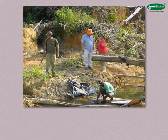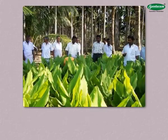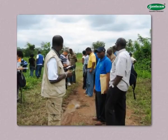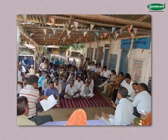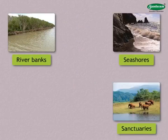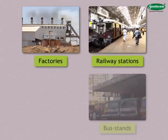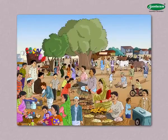Field visit. The field visit is an important method of study in geography. The main aim of a field visit is to actually visit a place in person and find out about its geographical conditions. On field visits, we get an opportunity to make observations and to meet the local people and discuss things with them. Places on the riverbanks, seashores, sanctuaries, nurseries, marketplaces, factories, railway stations, bus stands, and post offices can be suggested for field visits. A model of a field visit to the weekly market is given below.